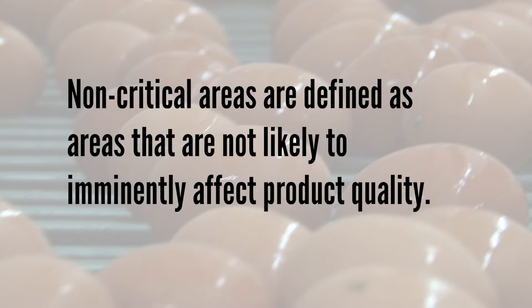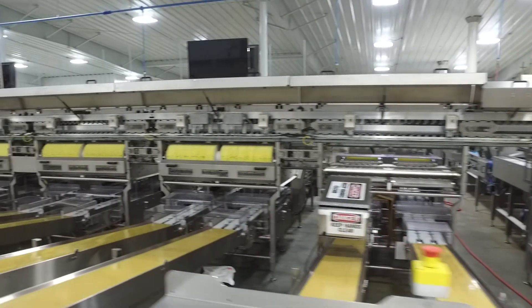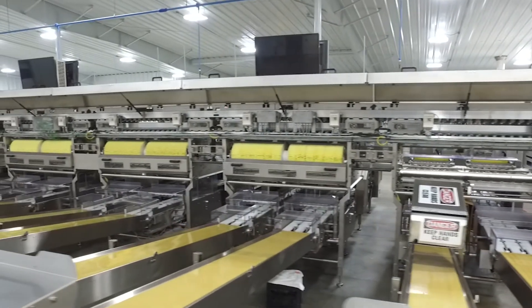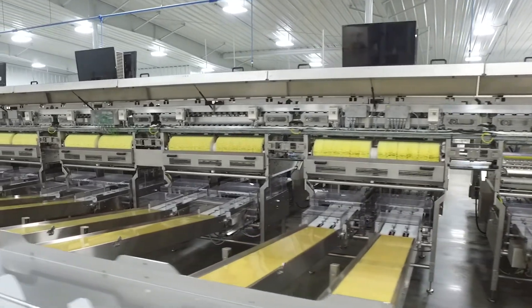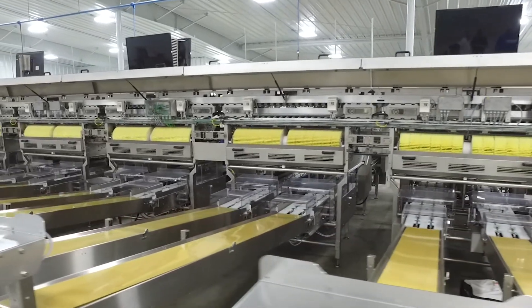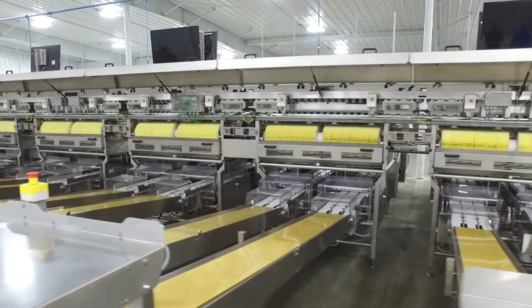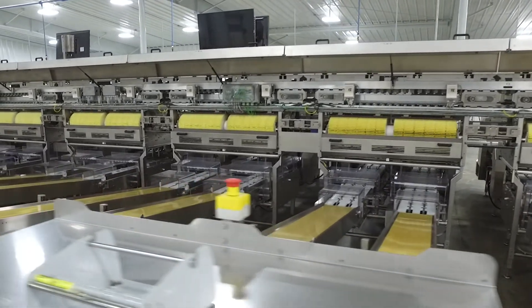Non-critical does not mean it is not important. Non-critical unsatisfactory conditions should be addressed after the processing line has been started, unless unable to safely do so during processing. In this module, the critical and non-critical areas of egg carriage systems present on the processing line will be identified and discussed.